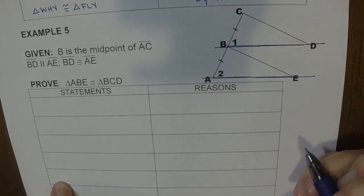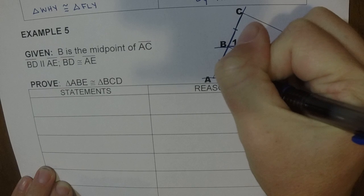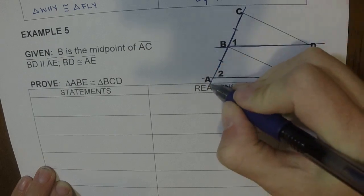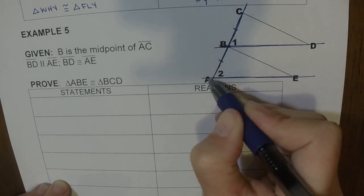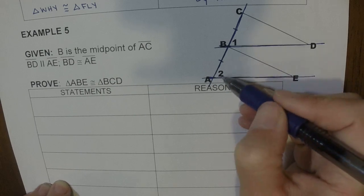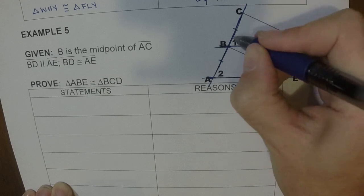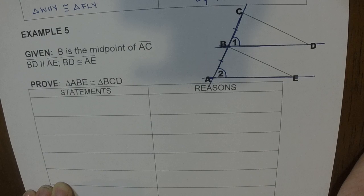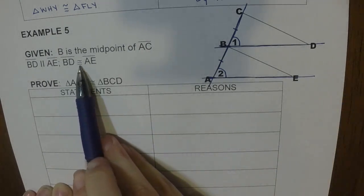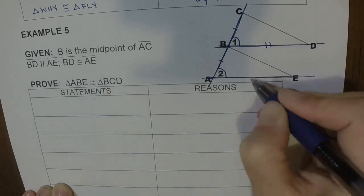So now the only line that crosses both of them, okay, is going to be this one right here. So now this is my transversal. And so now I've got a line here and here. So now one and two are corresponding angles. So I could say that this is congruent to this. And then the last thing is that BD is congruent to AE. So this is congruent to this.